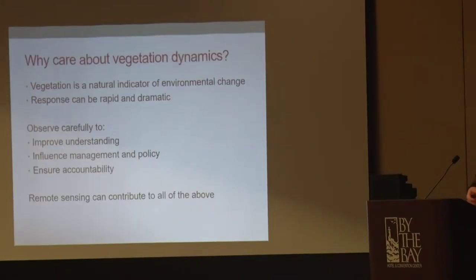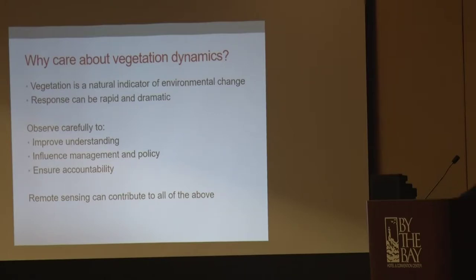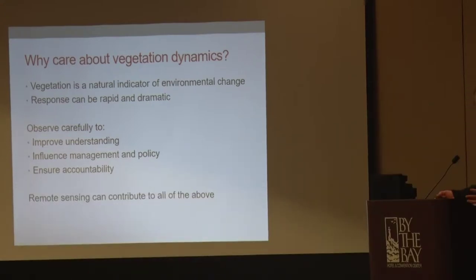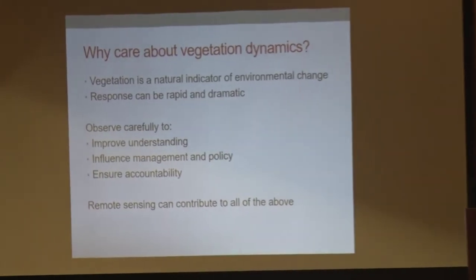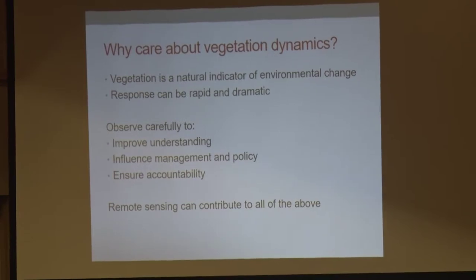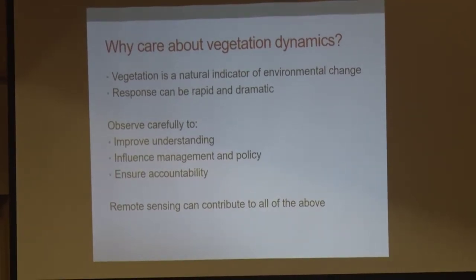I'm going to blow through this quickly. Why care about vegetation dynamics anyway? We all sort of appreciate vegetation as a natural indicator of environmental change, and some of the responses we can see in vegetation are fairly rapid and dramatic. If we observe vegetation carefully, we can improve our understanding about what's going on. We can influence management policy and ensure accountability — are we achieving what we want on the landscape? Remote sensing has the potential to contribute to all of the above.